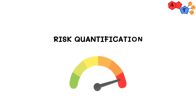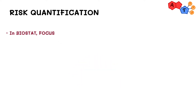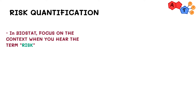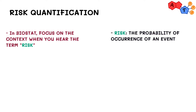Assalamu alaikum, welcome to another Biostats video. In this one, we'll be discussing how we can quantify risk. Risk always comes off as a hostile term, but risk depends not only on the number behind it, but also the context. That's the definition of risk used in biostatistics: the probability of occurrence of an event.